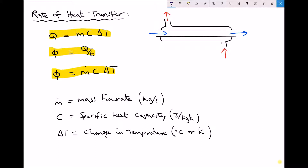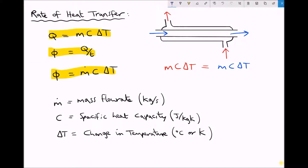What's going to happen is the hot fluid will lose heat energy and the cold fluid will gain that energy. If this system were 100% efficient, we would expect the energy lost by the hot fluid to equal the energy gained by the cold fluid. So we'd have mc delta T for the hot fluid equaling mc delta T for the cold fluid. We can also say the rate of heat lost by the hot fluid equals the rate of heat gained by the cold fluid.